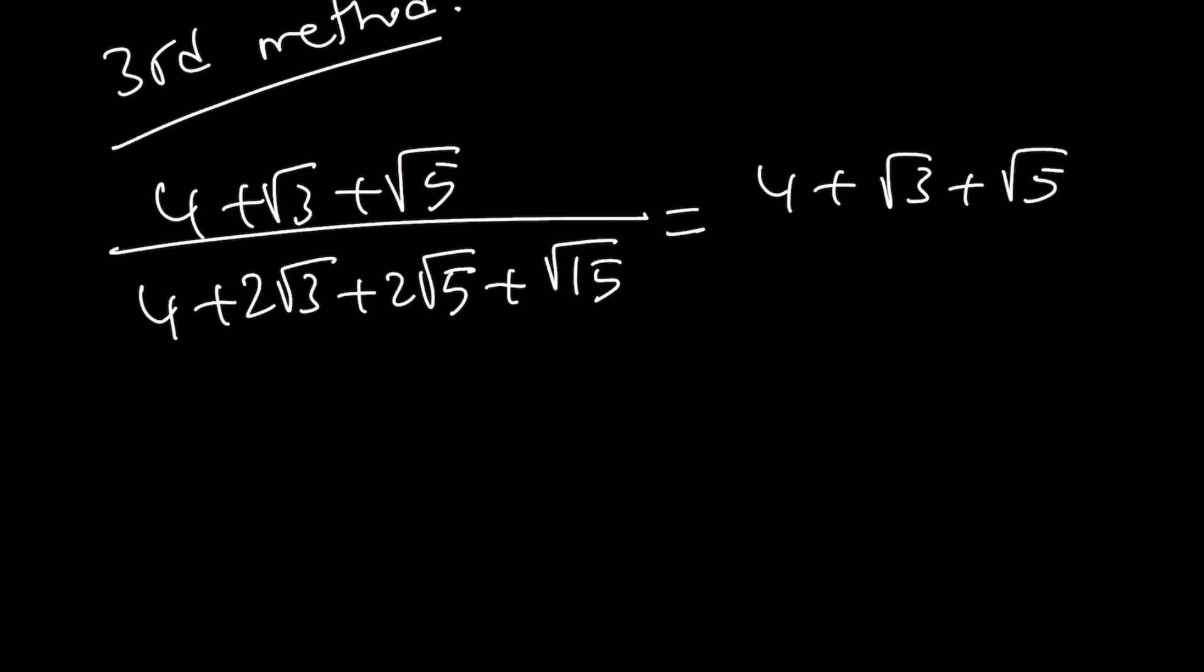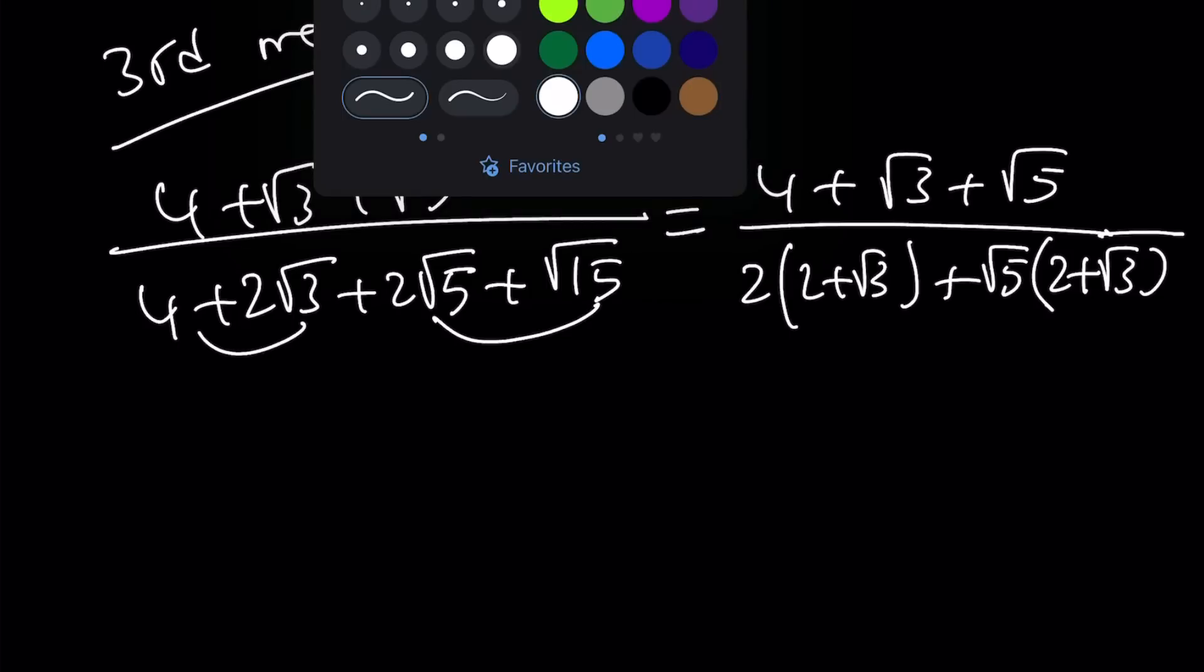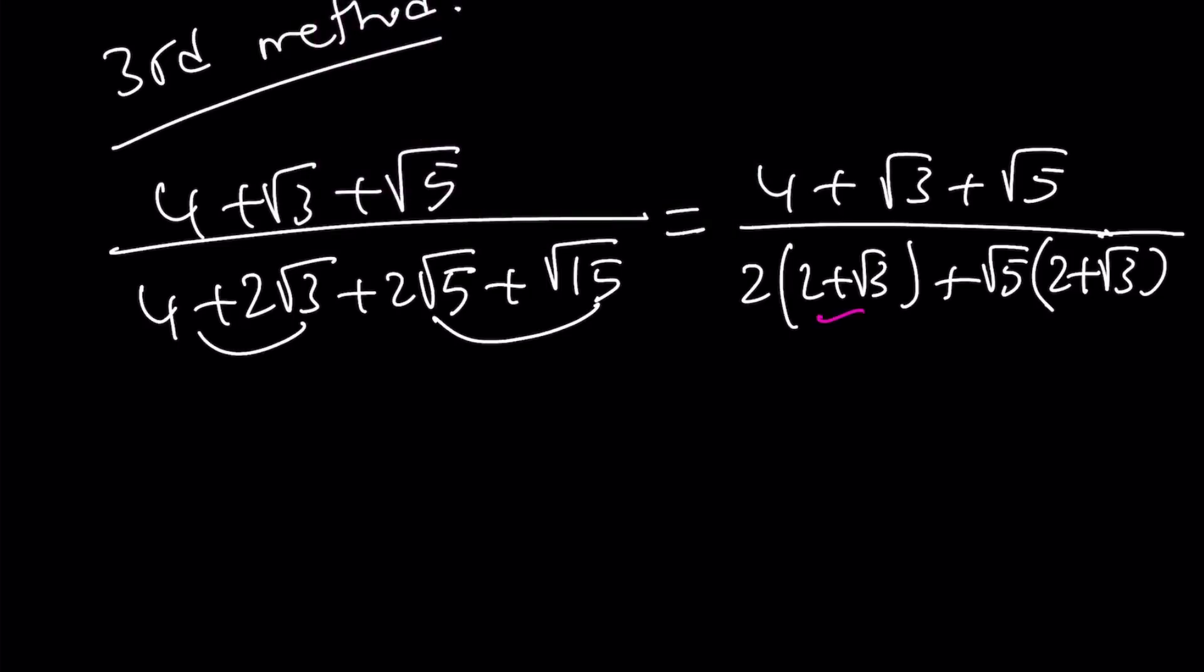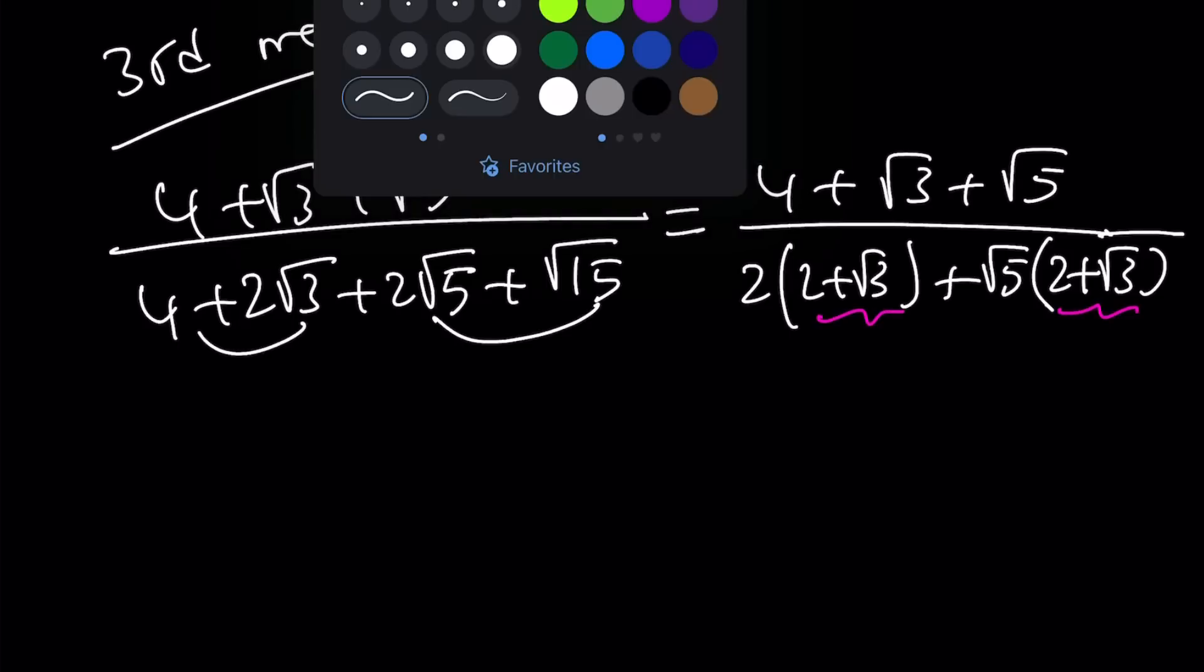I'm not going to do anything in the numerator yet. The bottom one, if I kind of group like this, first group, I can take out a 2, 2 plus root 3. And then in the second one, the common factor is root 5, and that gives me 2 plus root 3. Nice. It works. Because we do have the 2 plus root 3 in common. Let's see how we can proceed.